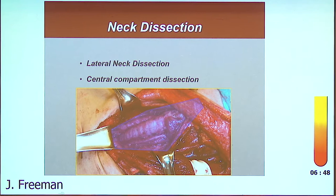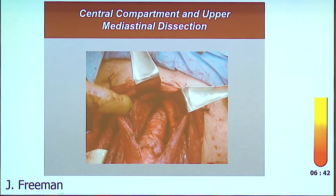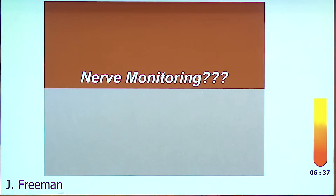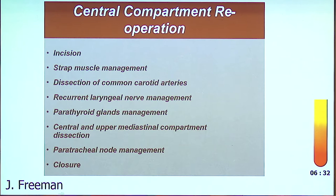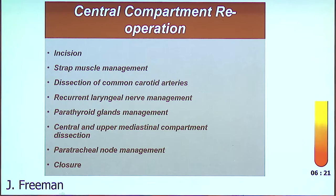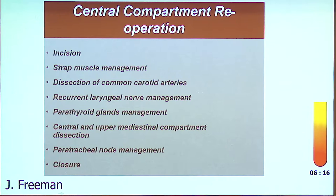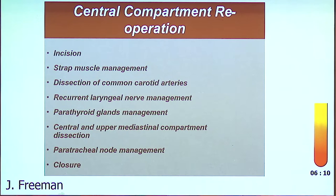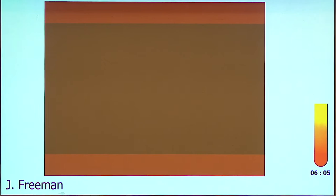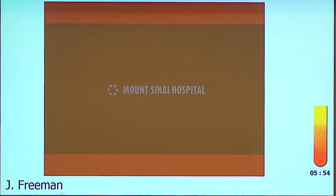We do use nerve monitoring for these cases. Here is the surgical menu I use to address revision central neck dissection — when I started there was no road map. We make an incision, manage the strap muscles, dissect the carotids — which are the best landmark because they don't move post-surgery — identify the recurrent nerves and parathyroids, perform our dissection, manage the nodes, and close. This short video was initially done by Matt McGarry from Australia and modified by John Bernstein.